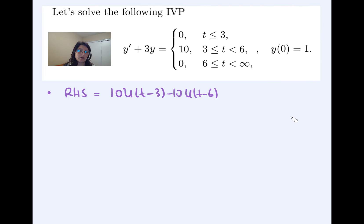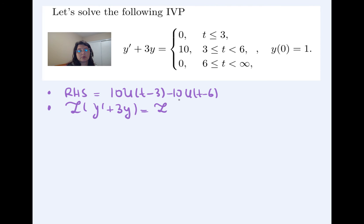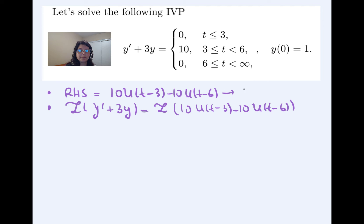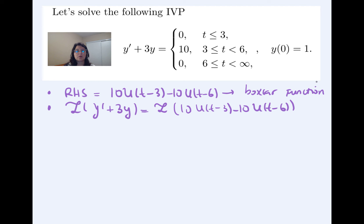Once the right hand side is written in terms of unit step functions, we apply the Laplace transform on both sides of the ODE: the Laplace transform of y′ + 3y equals the Laplace transform of 10·u(t−3) − 10·u(t−6). That right hand side function — zero before 3, value 10 between 3 and 6, zero after 6 — is called the boxcar function, here at height 10 rather than height 1.